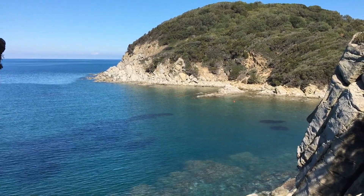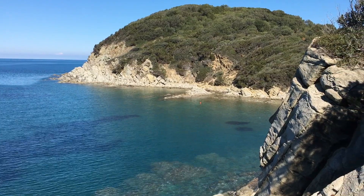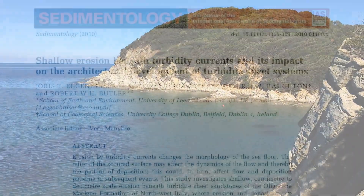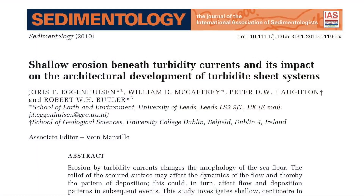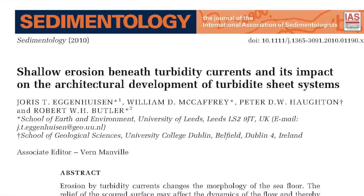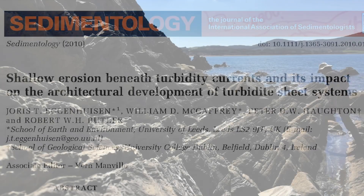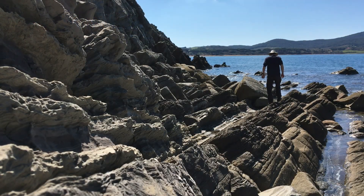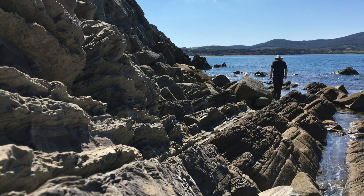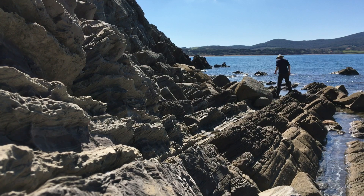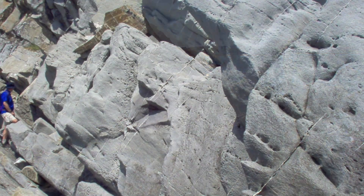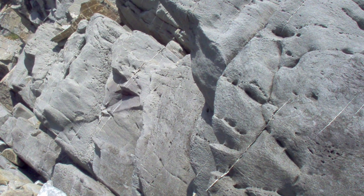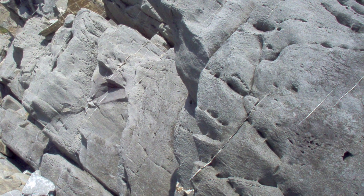These outcrops on the Baratti Gulf in Tuscany display some great sedimentary geology, described in a paper by Joris Iggenhusen and others. These sandstones are turbidites, the deposits of deep marine turbidity currents. Some of these sandstones are amalgamated, which means they're the products of several distinct flows — flows that have eroded the seabed.